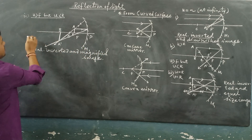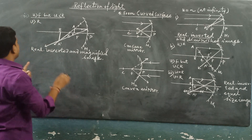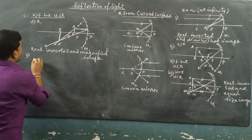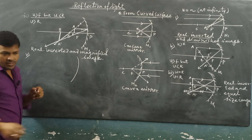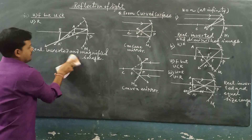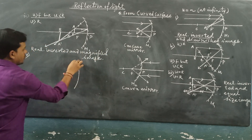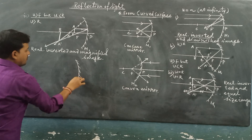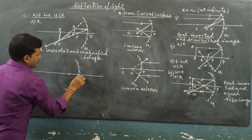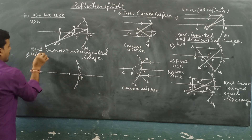The image distance V will be greater than R — the image will be formed beyond the center of curvature. For another position of the object in the concave mirror, when the object is in between P and F, that is U less than F, a virtual magnified image will be formed.